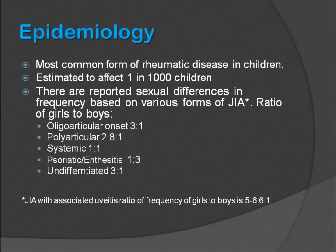In slide 6, we can see some of the important epidemiological features of this disease. It's the most common form of arthritis in children and adolescents, estimated to affect approximately 1 in 1000 children. There are reported sexual differences in frequency depending on the type of JIA. The ratio of girls to boys in almost all forms — with the exception of systemic onset JIA — is higher. JIA associated with uveitis presents at a ratio of 5 to 6.6 girls to every one boy, and the form presenting secondary to psoriasis or enthesitis has the girl-to-boy ratio reversed.